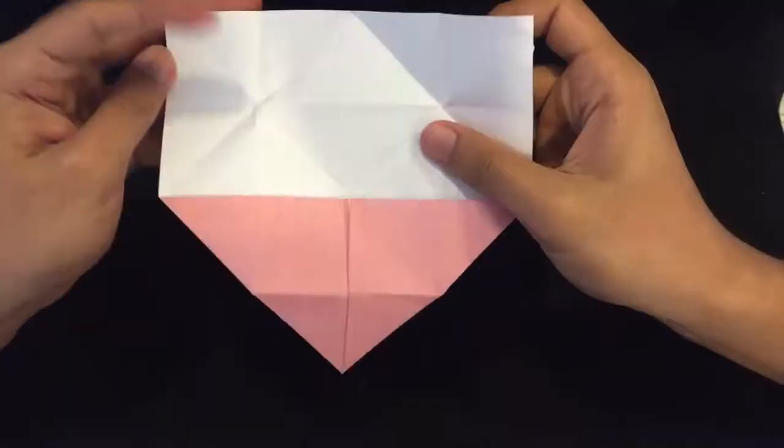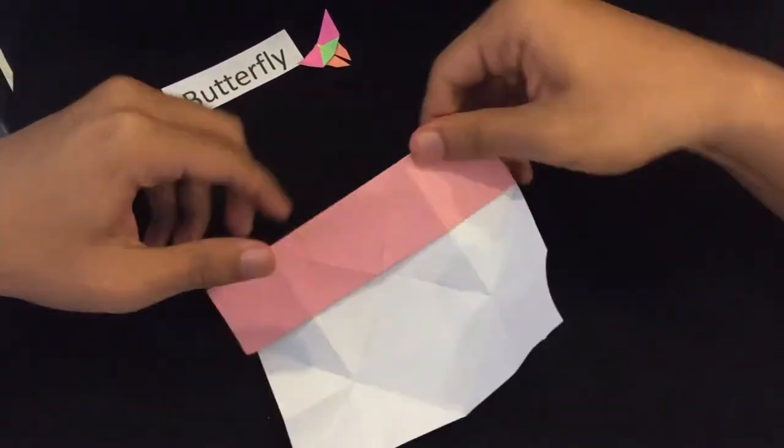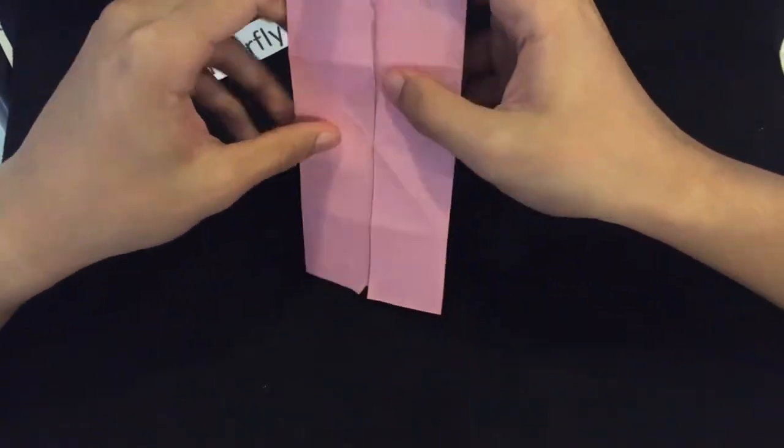The next step is to flip them out. Fold both sides into the center. Open the top half of the paper.